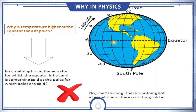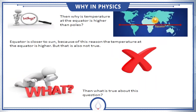Is something hot at the equator which is making its temperature higher than the poles? Or is there something cold at the poles which is making them cold? No, that's wrong. There is nothing hot at the equator and there is nothing cold at the poles. Then why is the temperature at the equator higher than the poles?